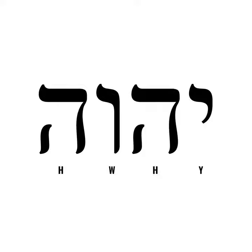During the later Old Testament period, the ancient Jews came to believe that God's name was too holy to be spoken out loud. And as time passed, they actually forgot how to pronounce God's name. Eventually, everyone who knew what vowels belonged in God's name had passed away. And because their alphabet lacked written vowels, they lost the knowledge of the correct pronunciation of God's name.